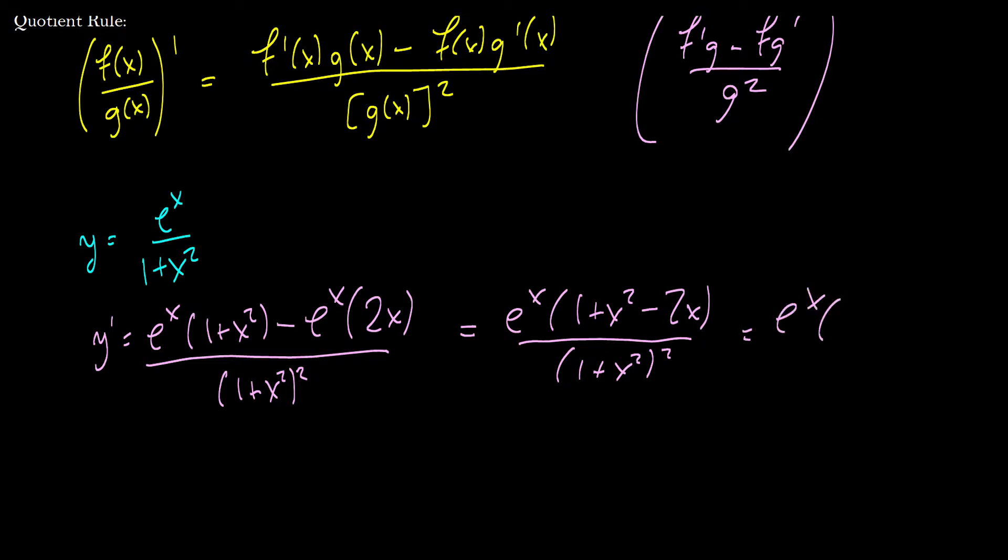And we can factor the top to make it look a little bit nicer. So this will be e to the x times, well, this is x squared minus 2x plus 1 is x minus 1, x minus 1. So this will be x minus 1 squared, all over 1 plus x squared squared. So really, if you're doing a problem on an exam, this is probably the end point. But taking it a little bit further won't hurt. I would not stop here since you haven't done any simplification yet. But I think what's in the green box here is a good stopping point.